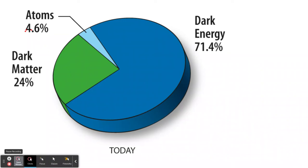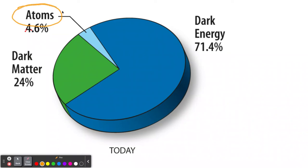Next we'll talk about states of matter — solid, liquid, and gas — and plasma like lightning, which is charged gas. But for now we need to talk about what the particles in matter are, and that brings us to atoms, which is our next topic.